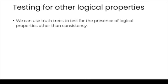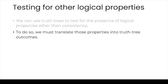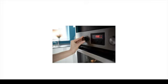We can use truth trees to test for the presence of logical properties other than consistency. To do so, we must translate those properties into truth tree outcomes. For example, suppose you have a recipe that tells you the temperature in Celsius, but your oven can only be set in Fahrenheit — you have to translate the Celsius instructions into the Fahrenheit scale your oven can work with. In an analogous way, the truth tree method only displays consistency or inconsistency, so to use it to test for validity, we must translate questions about validity into questions about consistency.